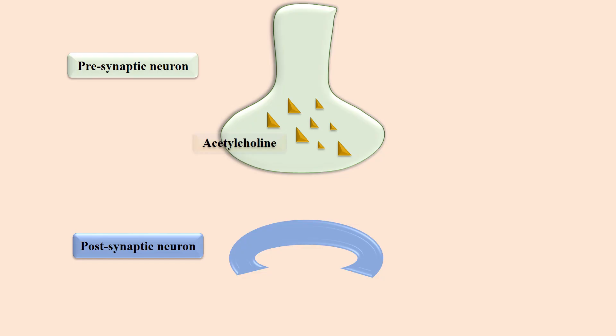Today we will discuss the mechanism of action of pralidoxime. First of all, we will see how acetylcholine performs its normal physiological function as a chief neurotransmitter of the parasympathetic nervous system.